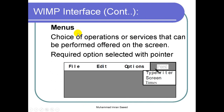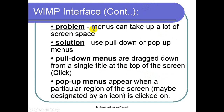Menus offer a choice of operations or services that can be performed, shown on the screen. The required option is selected with a pointer — either by clicking or using a shortcut. A problem with menus is that they can take up a lot of screen space, so the solution is to use pull-down menus or pop-up menus. Depending on our requirement and available space, we can use any of those particular menu types.